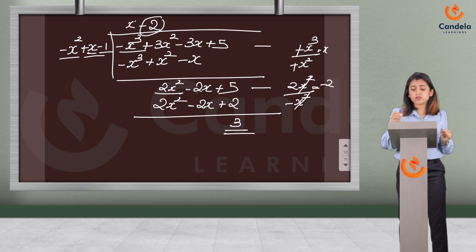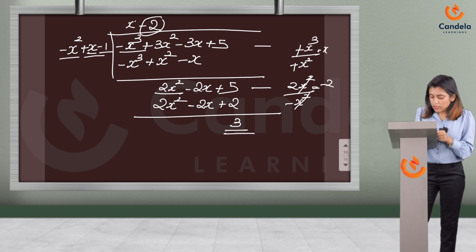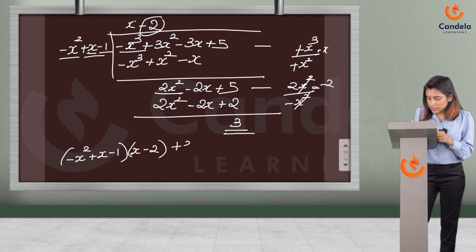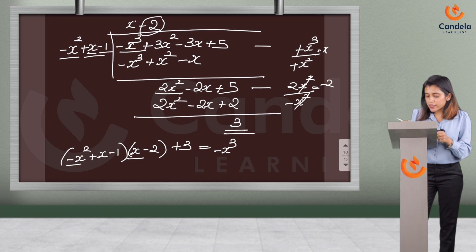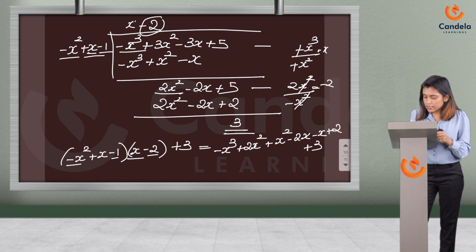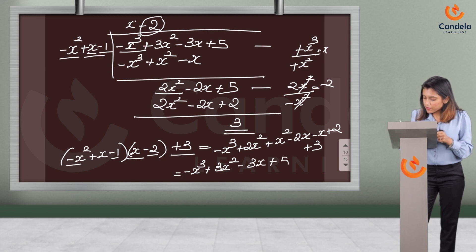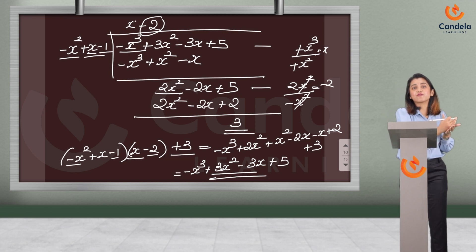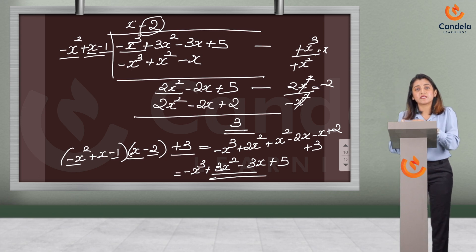Subtracting, we get remainder 3. To verify the division algorithm: divisor × quotient + remainder = dividend. So (−x² + x − 1)(x − 2) + 3 = −x³ + 2x² + x² − 2x − x + 2 + 3 = −x³ + 3x² − 3x + 5. We got the dividend, so the division algorithm is verified.